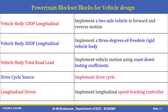The Powertrain Blockset includes blocks for designing electric vehicles. For example, the Vehicle Body 1DOF (longitudinal) block implements a two-axle vehicle in forward and reverse motion. The Vehicle Body 3DOF longitudinal block implements a three-degree-of-freedom rigid vehicle body. The Vehicle Body Total Road Load block implements vehicle motion using coast-down testing coefficients. The Drive Cycle Source block implements a drive cycle to test a system design. The Longitudinal Driver block implements a longitudinal speed tracking controller.